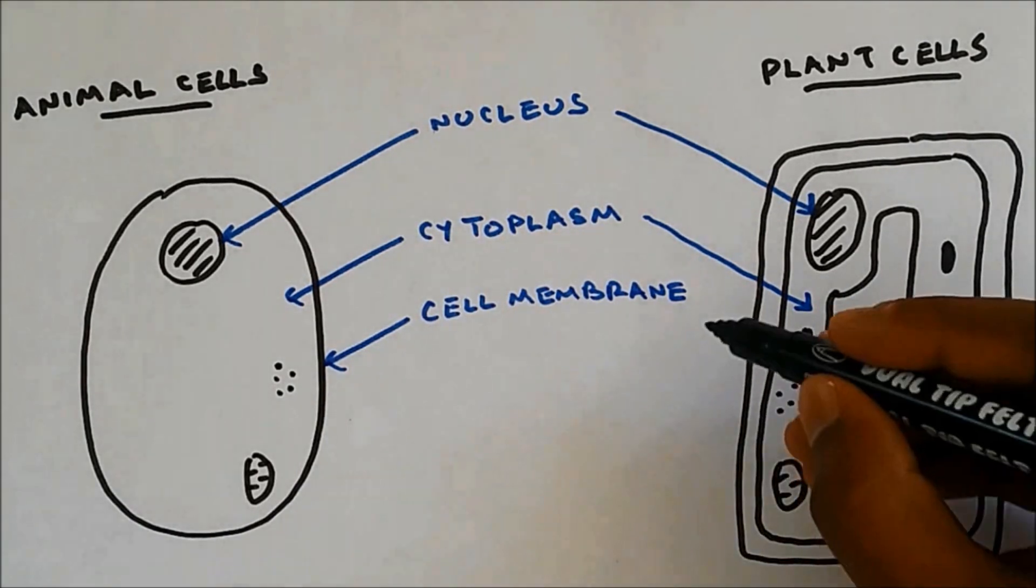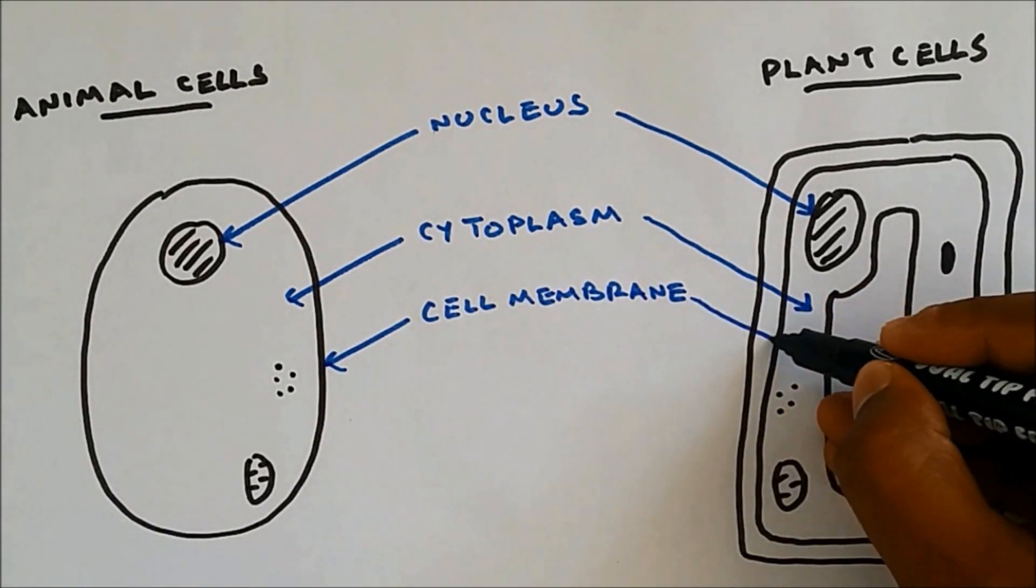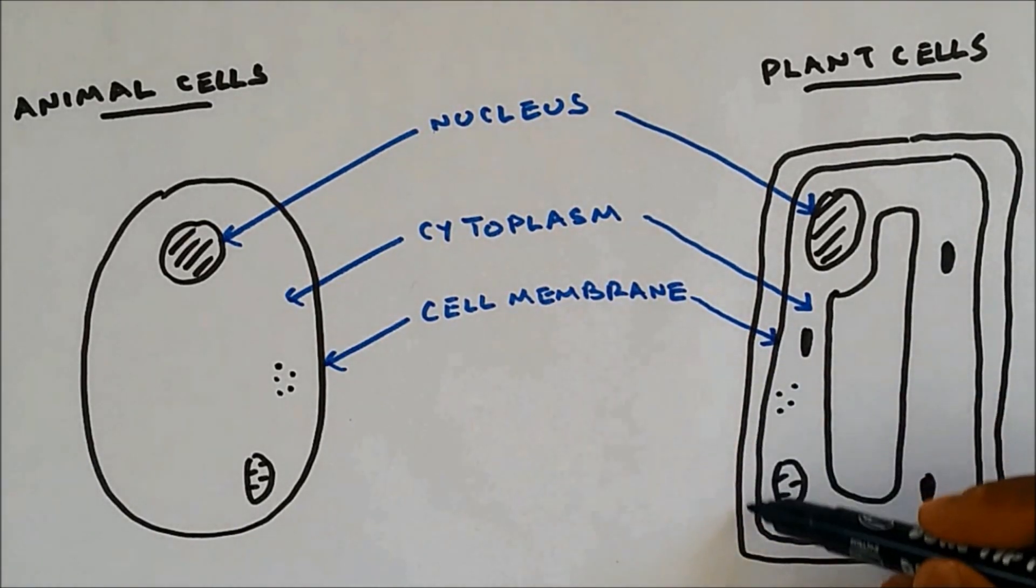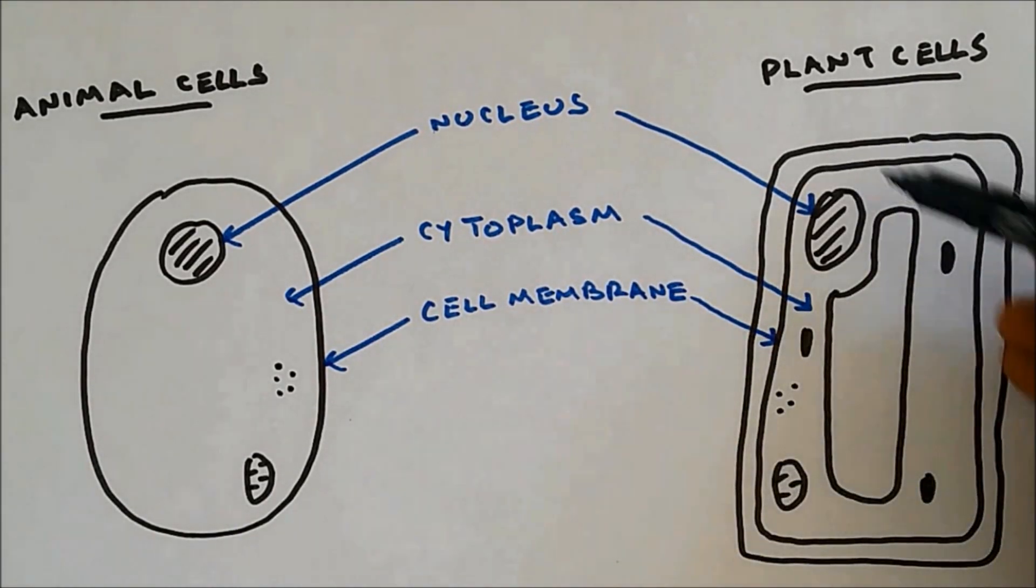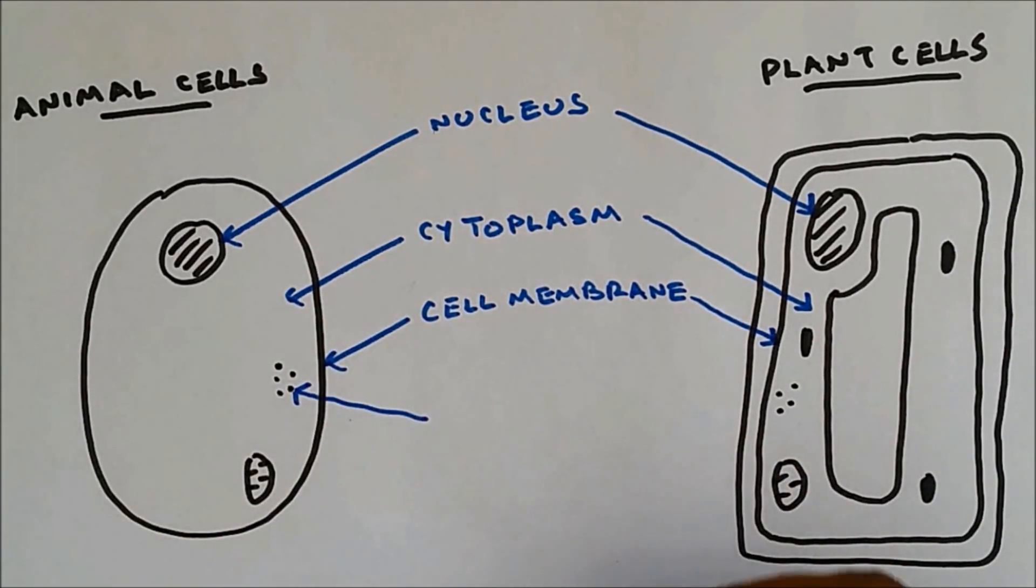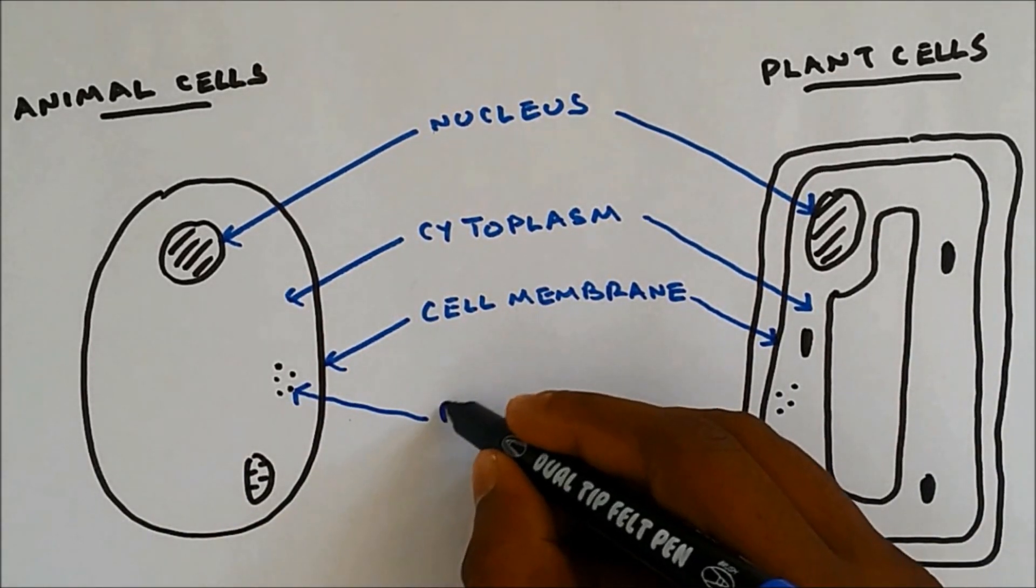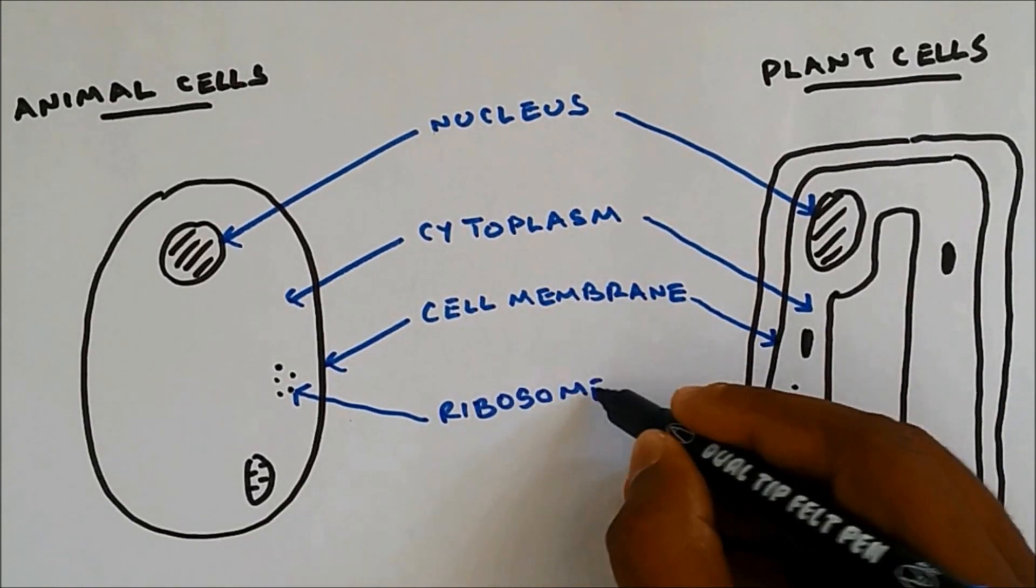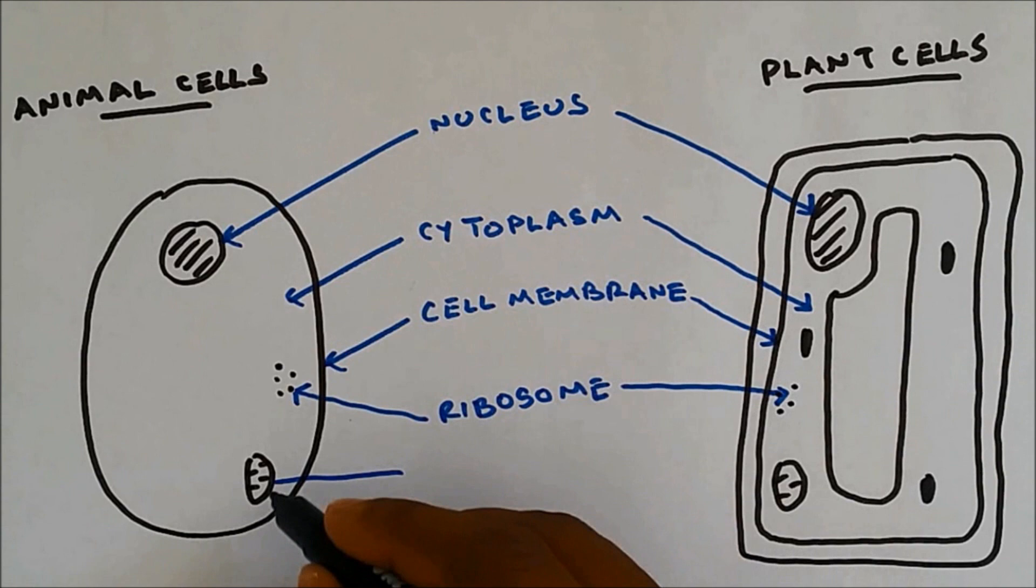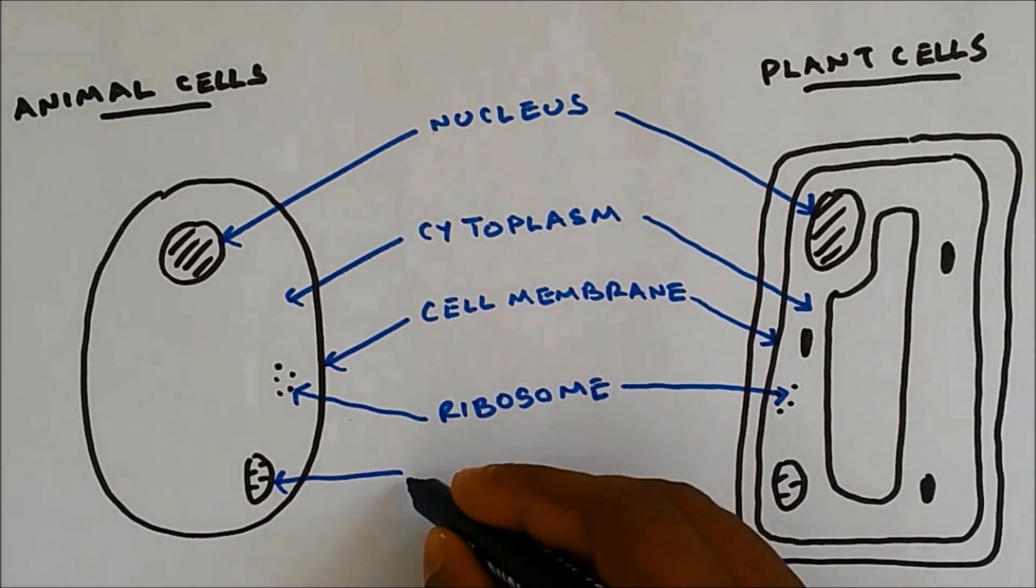And for a plant cell, it's not the outer layer. The cell membrane is the inner layer. The outer layer is the cell wall. The dark dots in the cell are ribosomes. And these are called mitochondria.